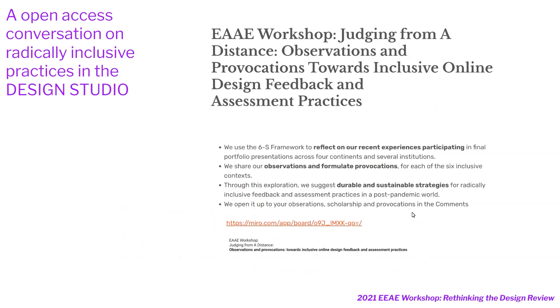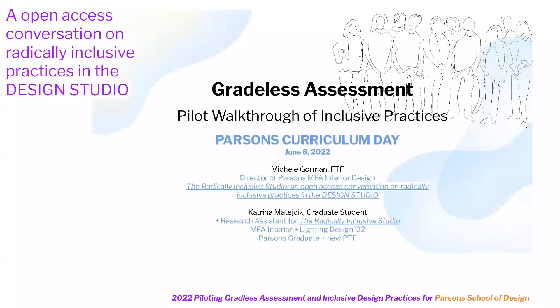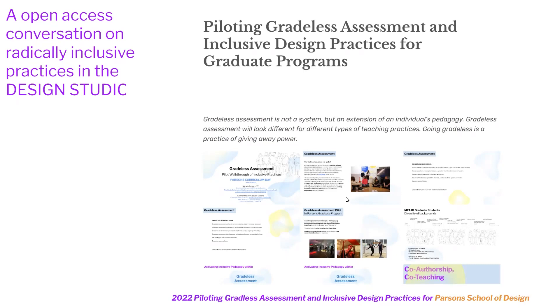In 2021, we started hosting our own workshops to open conversations to voices not being heard. Through active listening, we developed our own RIS framework, hosted online listening sessions and workshops, and began to apply it in our home institutions to address inequities — acting in kindness, generosity, and grace during and post-pandemic through rethinking the hierarchies of the design review, and building radically inclusive practices into the design studio through gradeless assessment and co-designing with our graduate students.